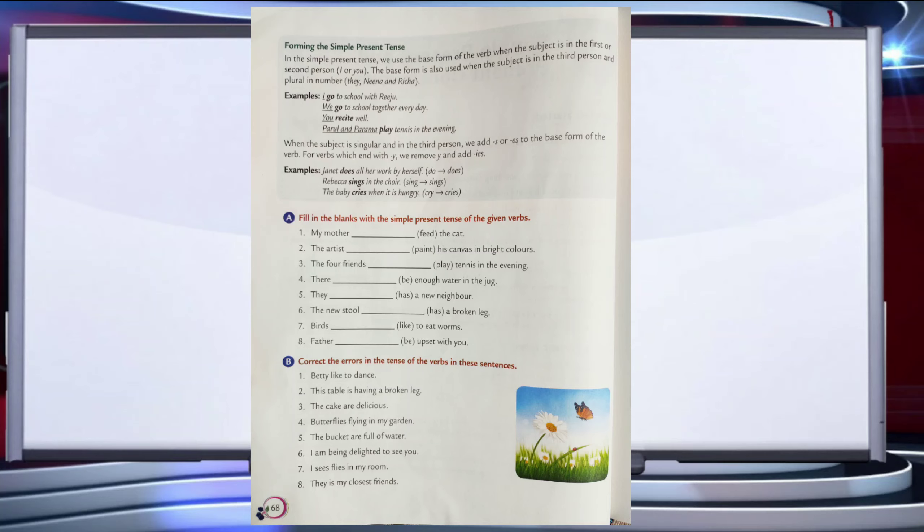For verbs which end with Y, we remove Y and add IES. For example: Janet does all her work by herself — here 'do' is the base form and we have added ES. Rebecca sings in the choir — 'sing' is the base form and we have added S. The baby cries when it is hungry — 'cry' is the base form and by removing Y we have added IES.